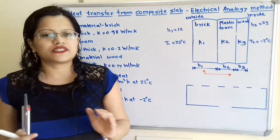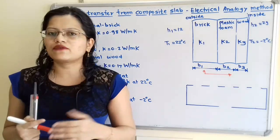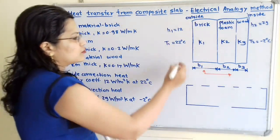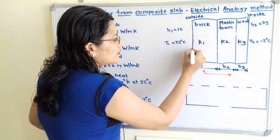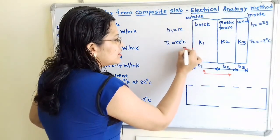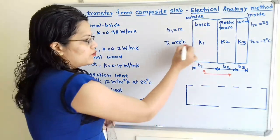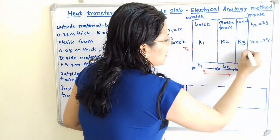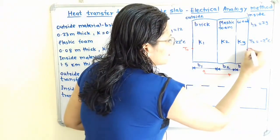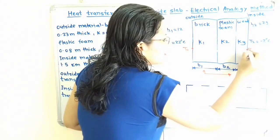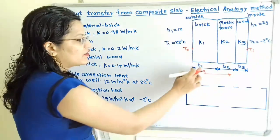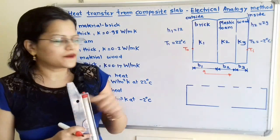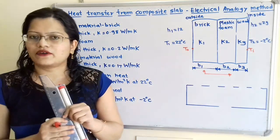We need to find the temperature of the outside wall, which we will call T0, and the temperature of the inside wall, which we will call Ti. We also need to find the heat transfer Q.